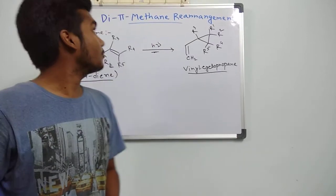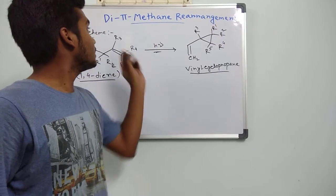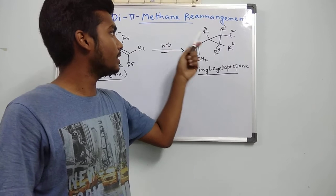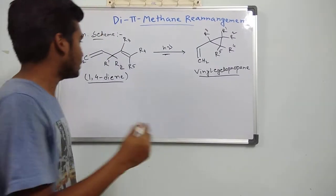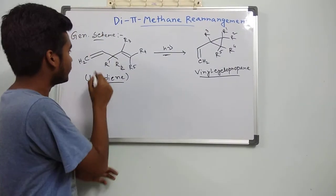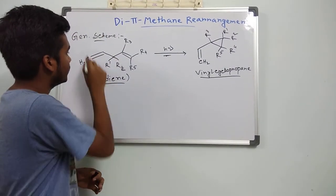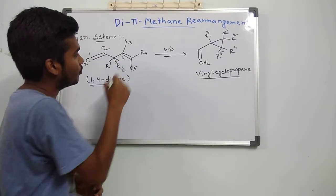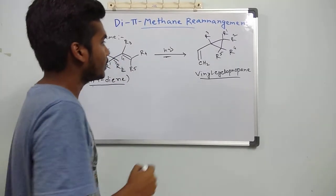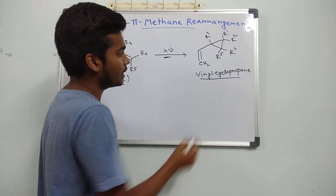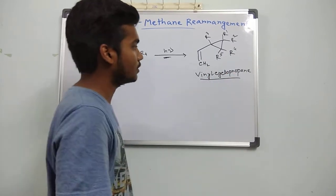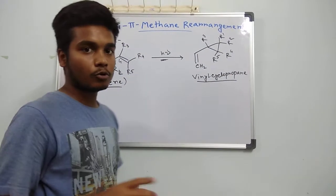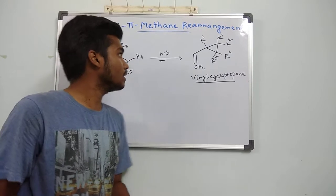Hello friends, today I am going to discuss the Di-π-methane rearrangement with reagent, also known as the Zimmerman reagent. Here we are using 1,4-diene, and in presence of photochemical light, we are getting this type of benzyl cyclopropane product. And this is the general scheme. Now I am going to the mechanism part.